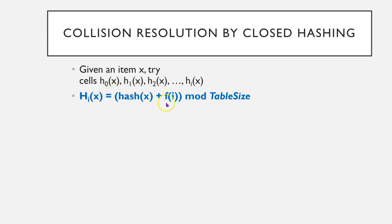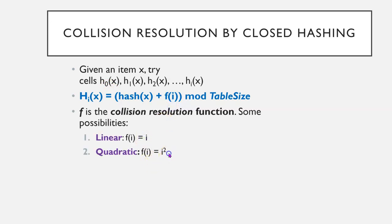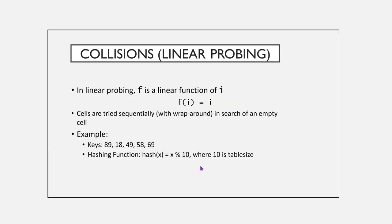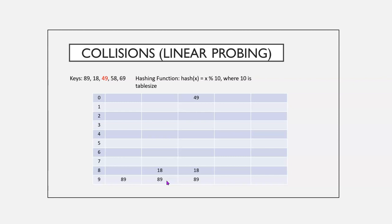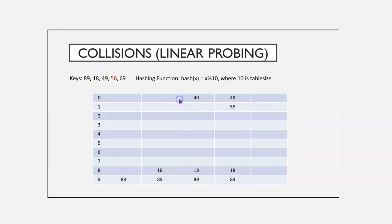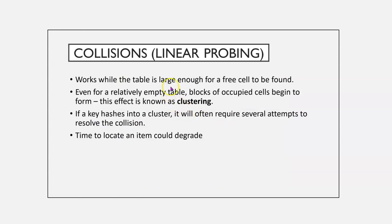So, given an item, if we use F of i, F of i squared is the quadratic, and then we could have a second hashing function, too. In linear probing, F is a linear function of i, so F of i equals i. Cells are tried sequentially with wraparound. So, 89, 18, 49, 58, 69. Well, if we have a hash function with 10th table size, we put in 89, then 18. 49, we have a collision, so it would wrap around. 58, we'd have another collision, so it would have to find the next spot, and so forth. Linear probing works while the table is large enough for a free cell to be found. Even for a relatively empty table, blocks of occupied cells begin to form. This is known as clustering. If a key hashes into a cluster, it would often require several attempts to resolve the collision. So, this means time to find it could degrade.